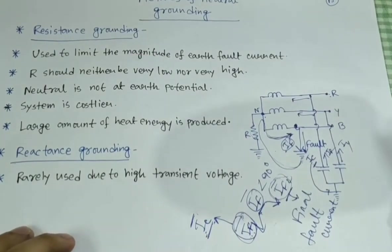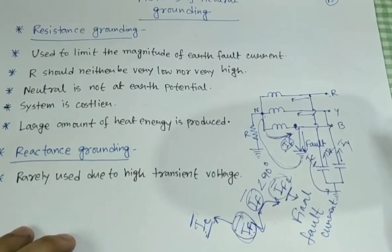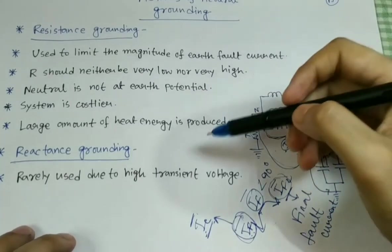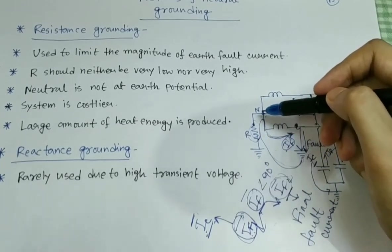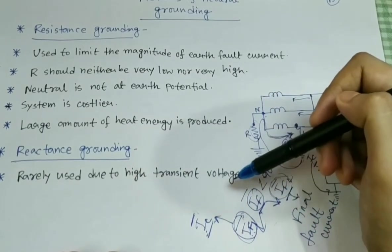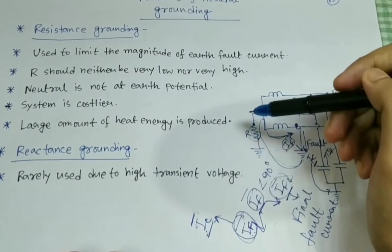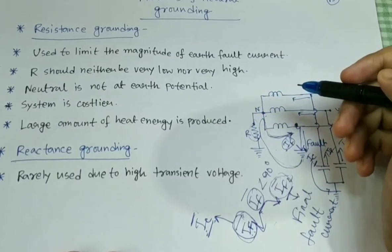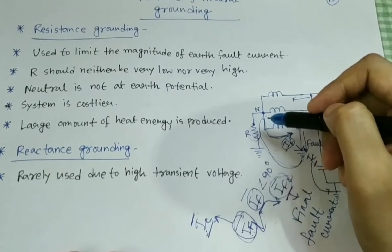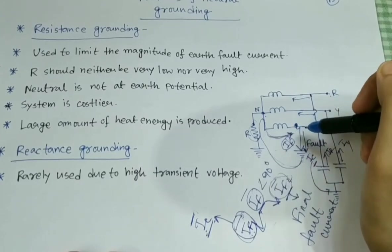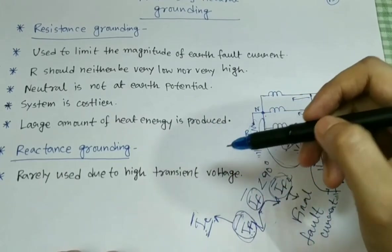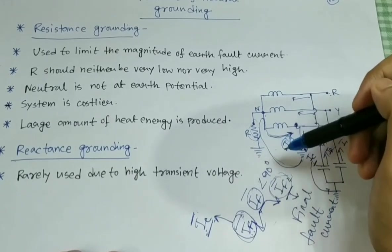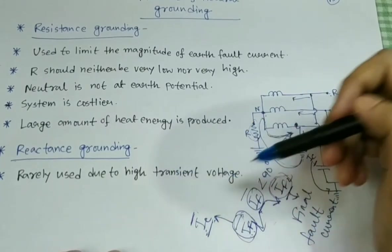That is an overall idea of resistance grounding. Now let's discuss reactance grounding. In reactance grounding, the only difference is that instead of a resistor, one reactor (inductor) is connected. However, due to the disadvantage of high transient voltage, it is rarely used. Because you are using an inductor, it will oppose sudden changes in the system. Whenever a fault happens there is a huge change in fault current magnitude, so the reactor opposes this change, which further results in high transient voltage.